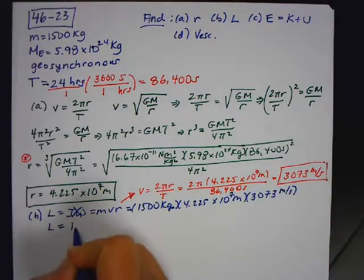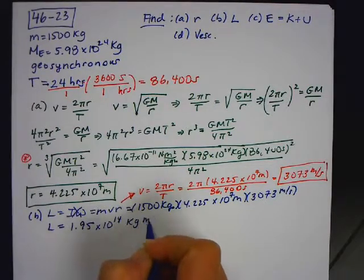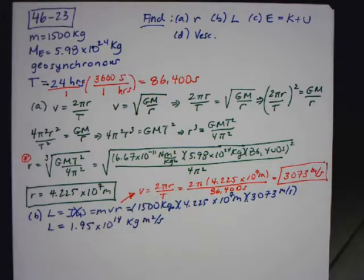So this is 3073 meters per second. So L is 1.95 times 10 to the 14 kilogram meter squared per second.